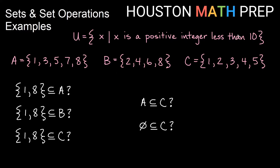I've defined my universal set for these set operations using set builder notation. My universal set is all objects where the object is a positive integer less than 10 — a counting number less than 10. So that would be 1 through 9, all the counting numbers. Those are all of the objects we're considering. That's what the universal set tells us.